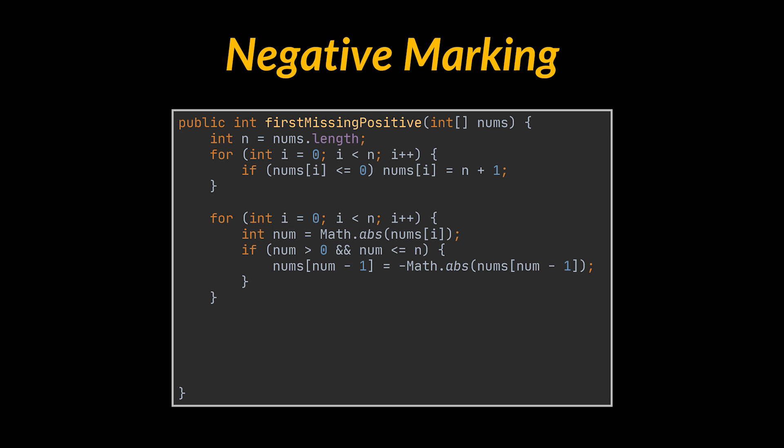Now we can apply the same exact algorithm we know. As a reminder, the negative marking technique will attempt to use the elements stored inside the array as indices. The elements stored at that retrieved index will be flipped to a negative sign allowing us to keep track of the elements present in the array. When we are done going over all the elements, we make a final pass at the array and check which index still corresponds to a positive integer. That integer will be the value we are looking for.